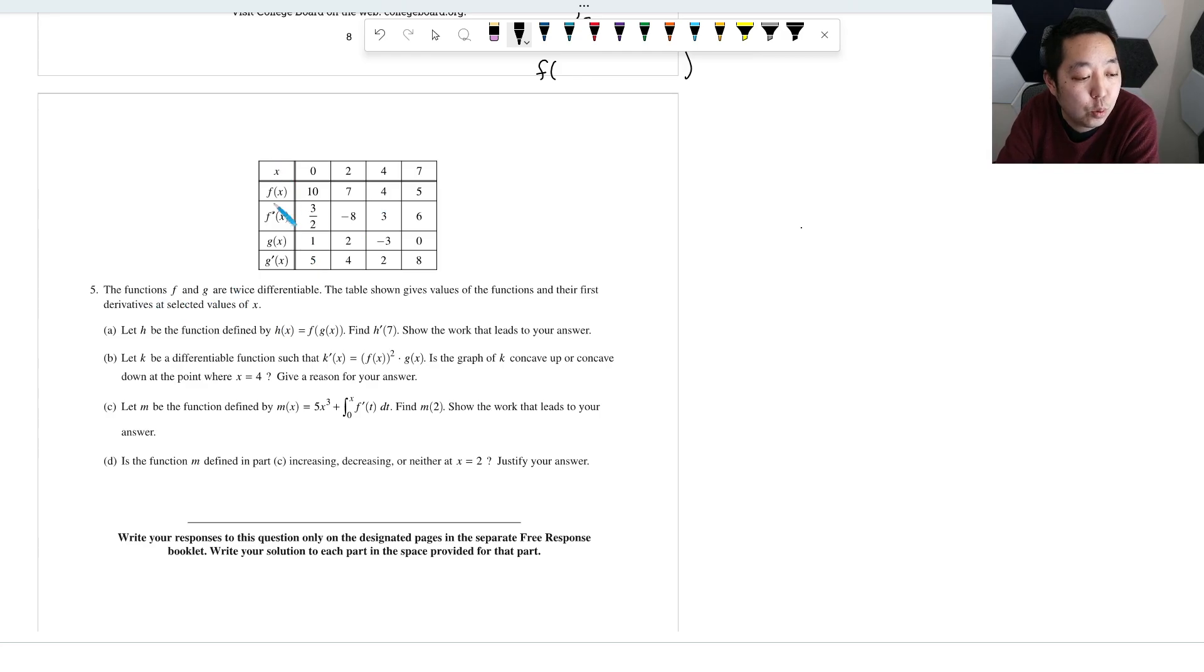Alright, functions f and g are twice differentiable. The table shows the given values of the functions and the first derivative at selected values of x. Let h be the function defined by that.